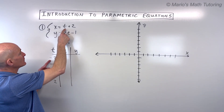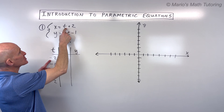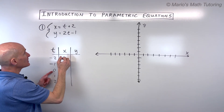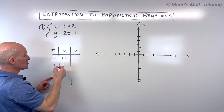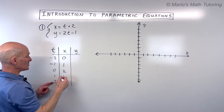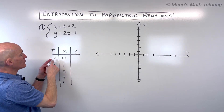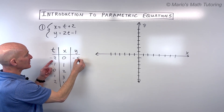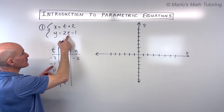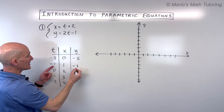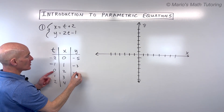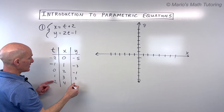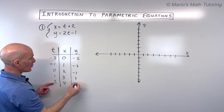Let's go ahead and put negative two in for t. Negative two plus two is zero. Negative one plus two gives us one. Zero plus two is two. One plus two is three. And two plus two is four. Now for the y equation, putting in these t values: two times negative two is negative four, minus one is negative five. Two times negative one is negative two, minus one is negative three. Two times zero is zero, minus one is negative one. Two times one is two, minus one is one. Two times two is four, minus one is three.